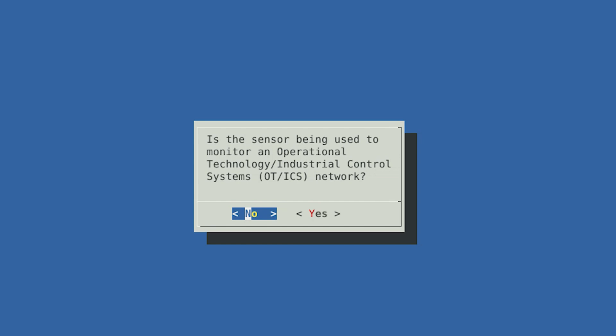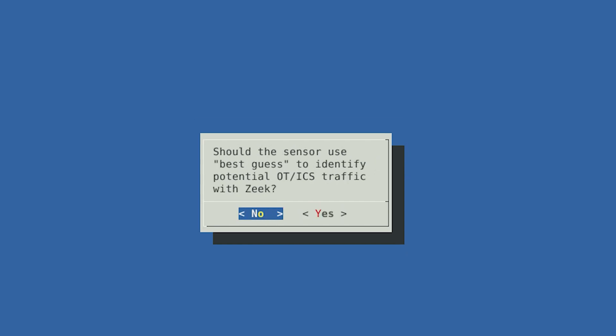If you know the network you're monitoring uses industrial control systems protocols, select Yes. Otherwise, select No. If you selected Yes to the previous question, this follow-up question asks if you would like the Hedgehog sensor to attempt to identify additional OT or ICS traffic that it's not 100% sure about. This best-guess feature can help flag industrial control systems protocols that Malcolm doesn't yet have full support for, which could also result in more false positives.